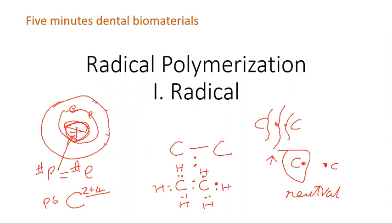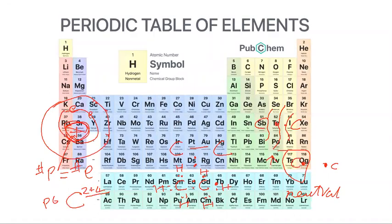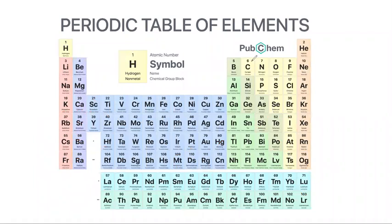Which elements can form free radicals? When we look at here, something like carbon, nitrogen, or this dose area may form free radicals. Like here, sodium, magnesium, can they form free radicals? Very rarely.